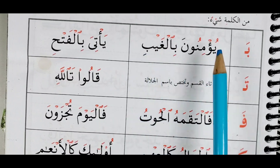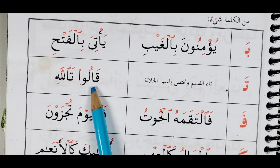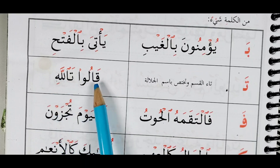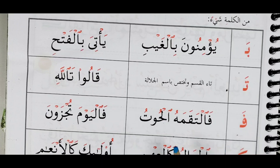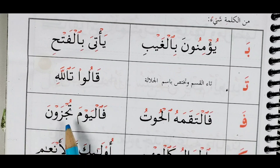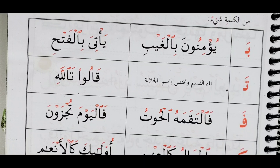يؤمنون بالغيب — يؤمنون بالغيب. يأتيا بالفتح — يأتيا بالفتح. We said you ignore the one before. قالوا تالله — قالوا تالله. فالتقمه الحوت — فالتقمه الحوت. فاليوم تجزون — فاليوم تجزون. الجبال كالعهن — أولئك كالأنعام.